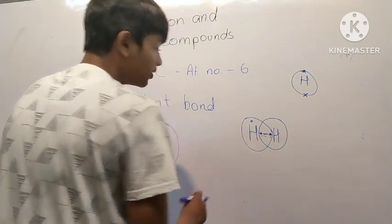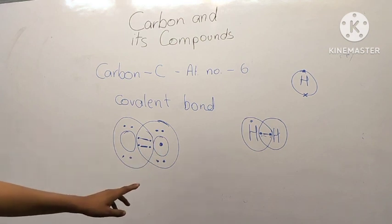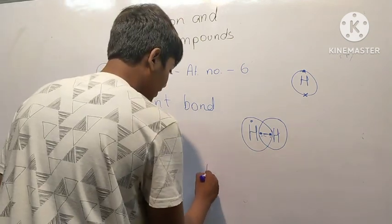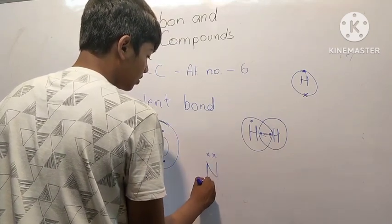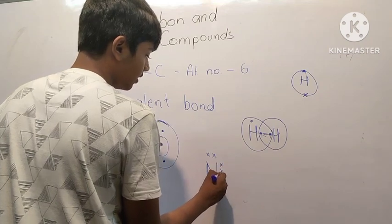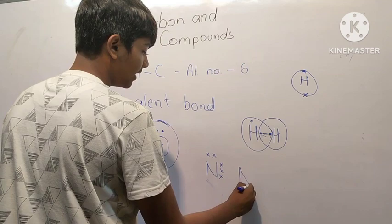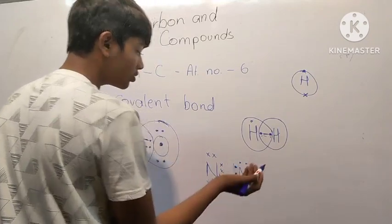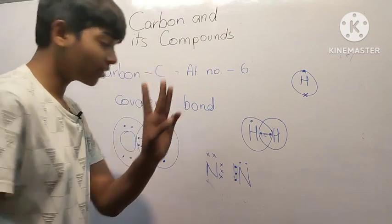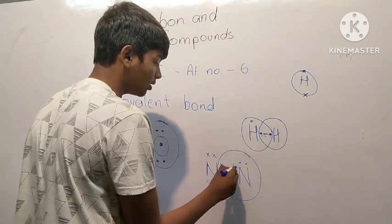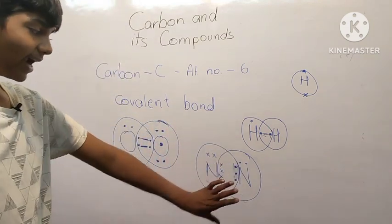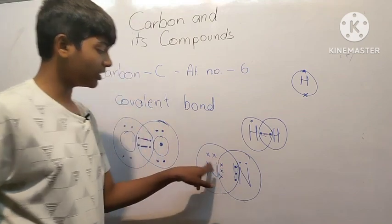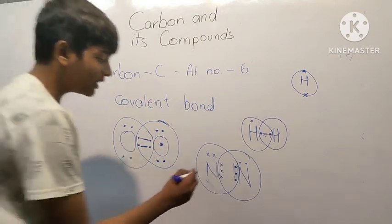Now let's look at nitrogen. Nitrogen has five electrons in its outermost shell, so it requires three more electrons. One nitrogen atom shares three electrons with another nitrogen atom. Both atoms end up with eight electrons, completing the octet. They are forming three pairs of electrons — a triple bond.